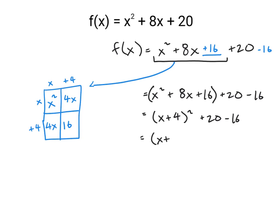We can simplify this further to (x + 4)² + 4, which is a quadratic function in vertex form.